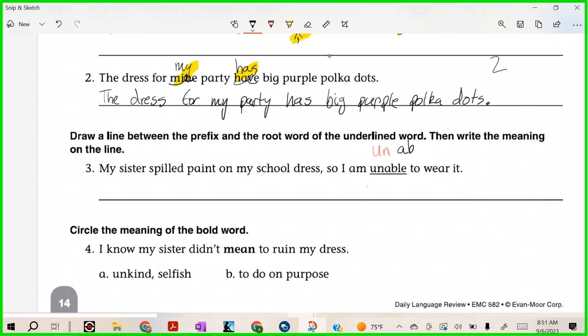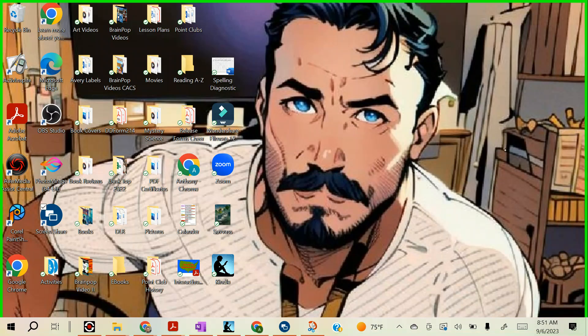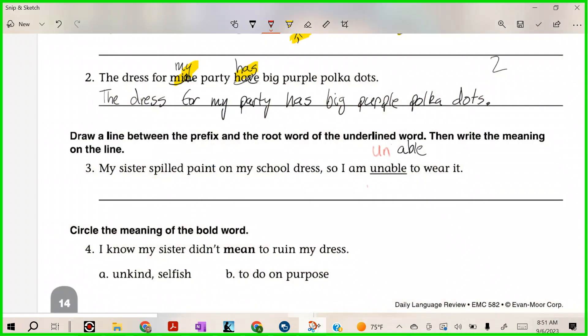Now what does the prefix 'un' mean? Every prefix has its own meaning. Case, yes? 'Un' equals 'not.' So what do you suppose 'unable' means? 'Un' equals 'not,' then what does 'unable' mean? Jack? Not able. So not able to wear. That's fine.